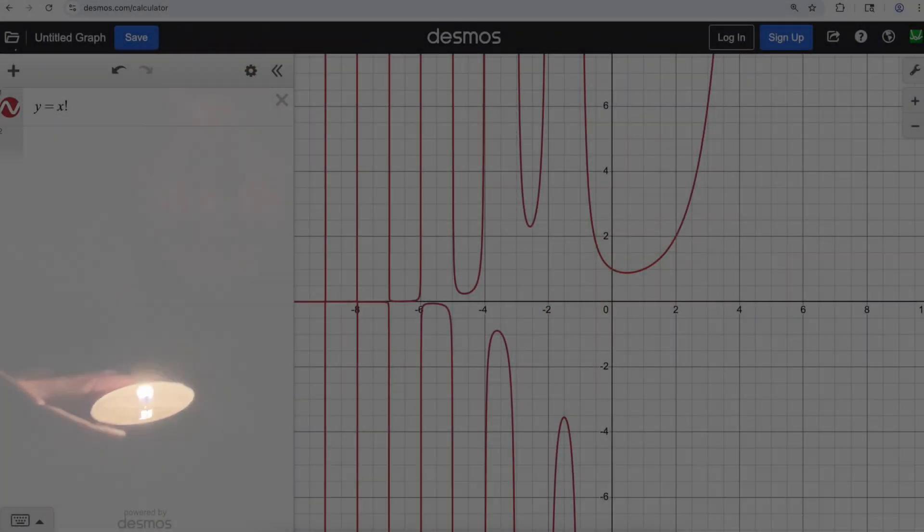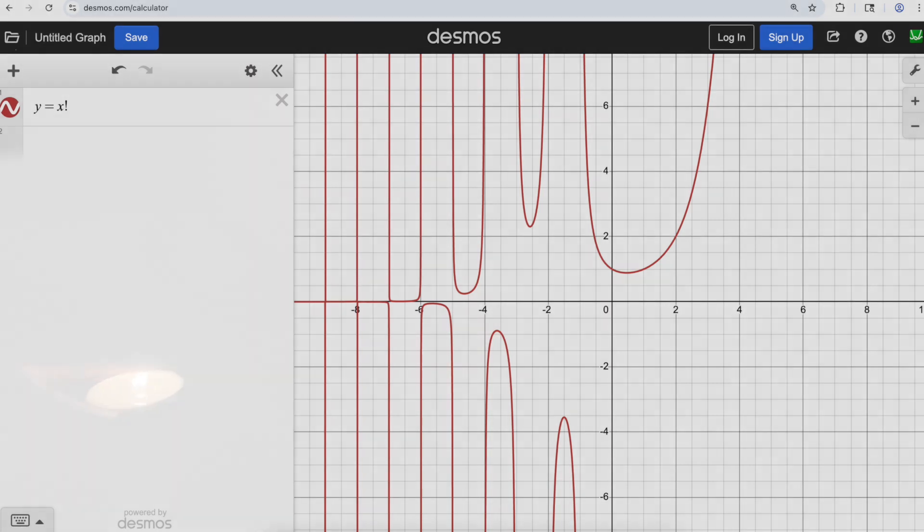And then there are some sequences that have even crazier extensions if you want to try to get to the negative second term or something like that, such as the factorials and what's called the gamma function. But that's a story for another day.